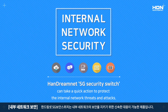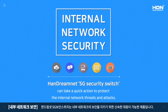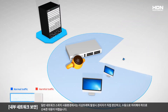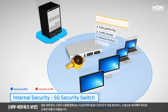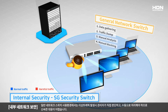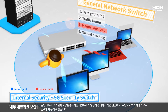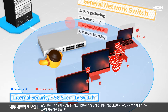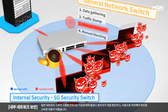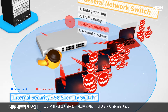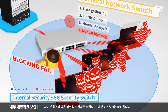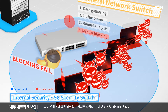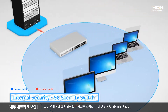DreamNet's SG Security Switch can take quick action to protect the internal network from threats and attacks. It is possible for employees to send malware traffic to the network without any notice, and employees can bring their own devices and connect them without confirmation. In a general network environment, a quick response and fast resolution is not possible because harmful traffic needs to be analyzed manually. In the meantime, the harmful traffic spreads to the whole network and brings it down.